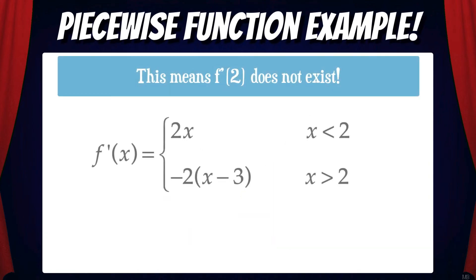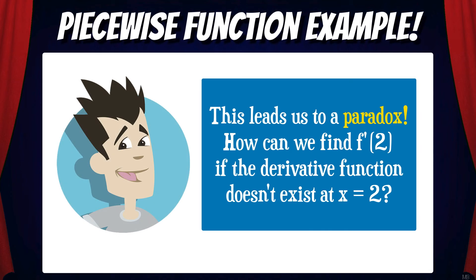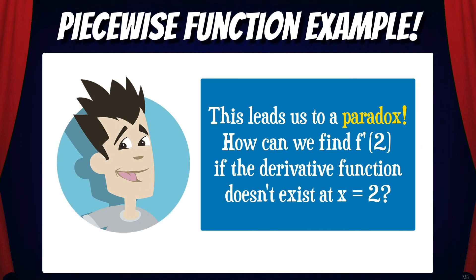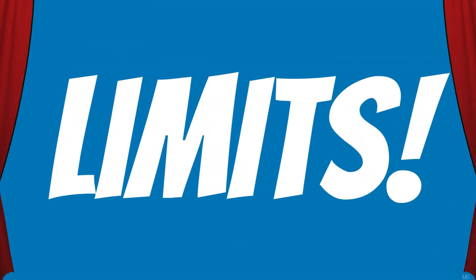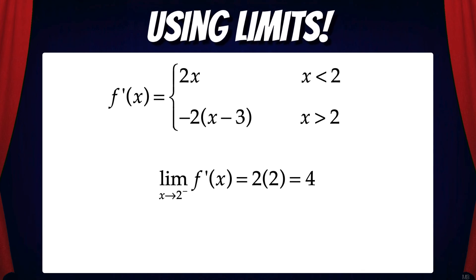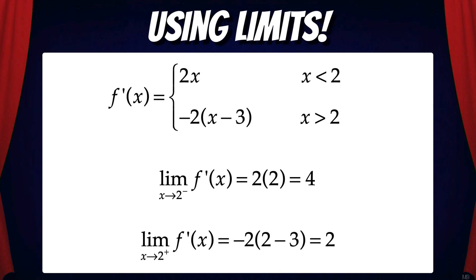And that means the derivative function does not exist at x equals two. But this leads us to a paradox. How can we find f prime if the derivative function doesn't exist at x equals two? And the answer is limits! We're going to take the limit of f prime as x goes to two from the left, and the limit of f prime as x goes to two from the right, and see if they match.